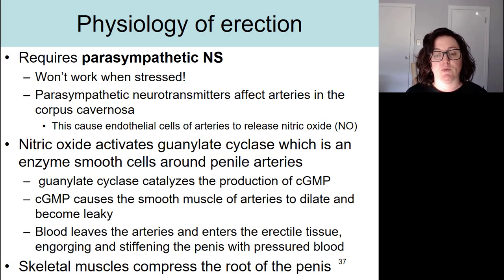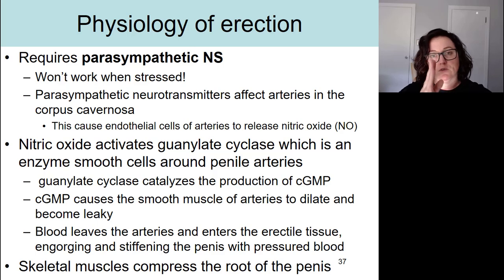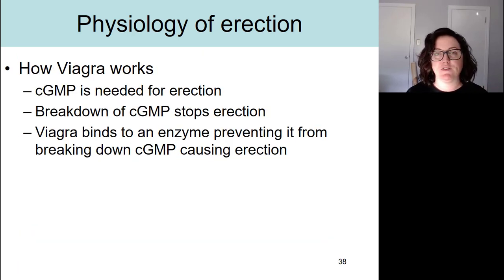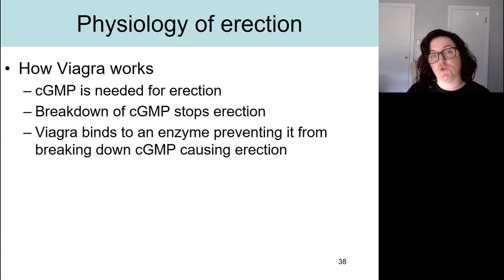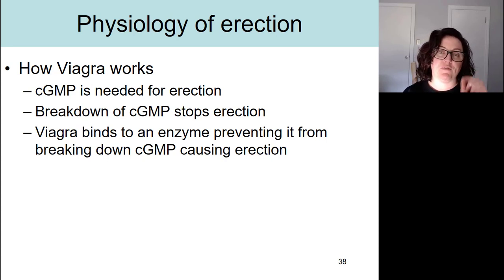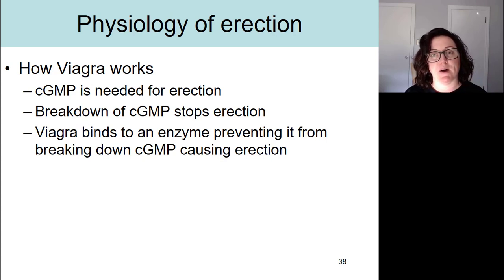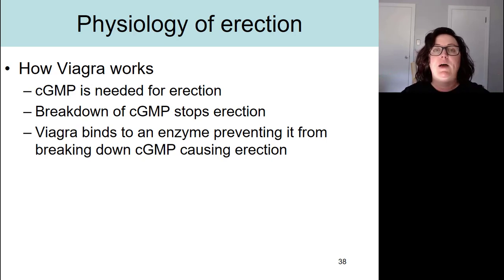Also happening during erection is contraction of the skeletal muscles in the pelvic floor. They compress on the root of the penis, which also aids in erection. Cyclic GMP is needed for erection, and this is why Viagra works: Viagra is a drug that prevents the breakdown of cyclic GMP. There's an enzyme in the male body that breaks down cGMP, but Viagra inhibits that enzyme, allowing cyclic GMP to have its full effect.